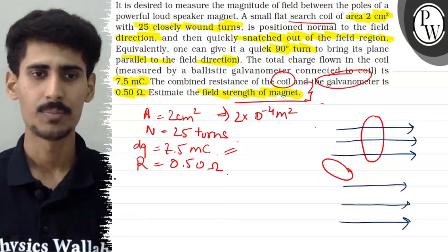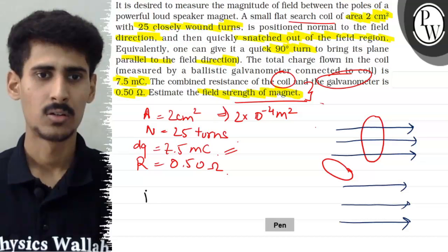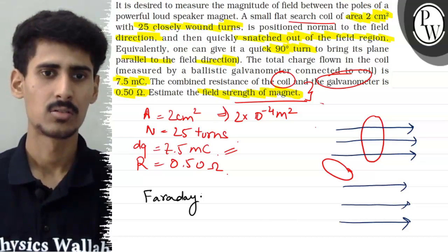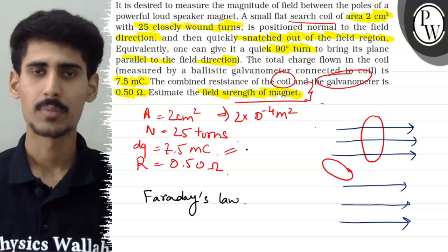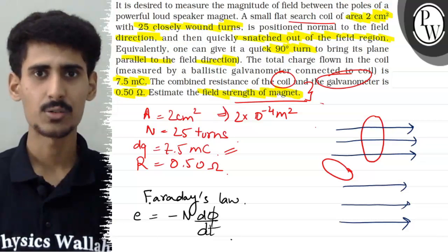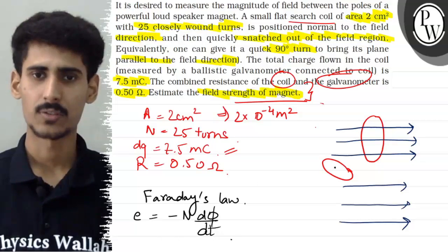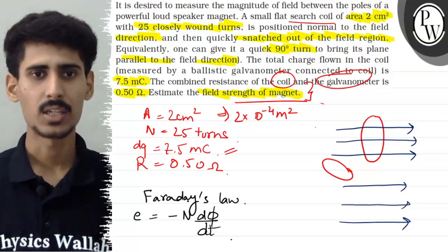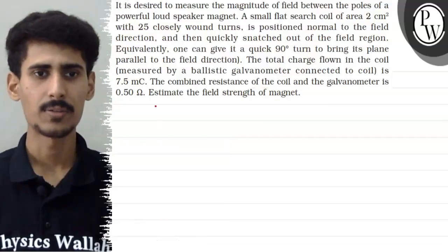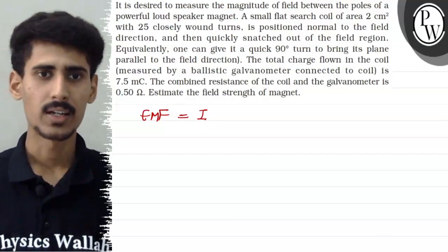Here is our key formula. The key formula we have to use here is Faraday's law of EMF generation. The EMF generated in the coil is equal to minus N times dΦ/dt, where N is the number of turns and dΦ/dt is the rate of change of flux. The EMF generated is also equal to the current produced in the coil times the resistance of the coil.